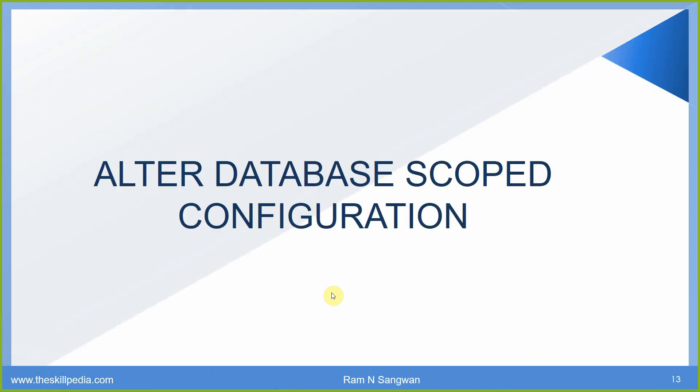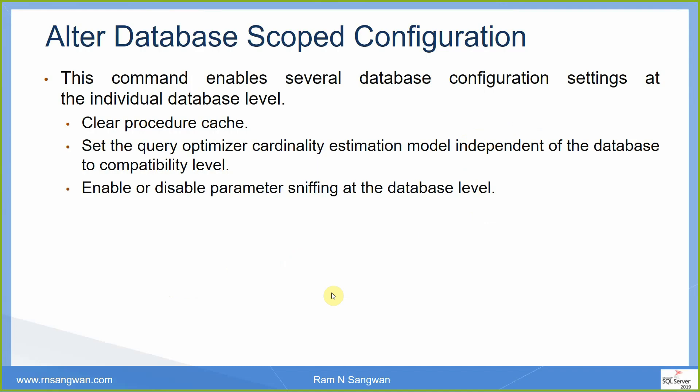The next part covers ALTER DATABASE SCOPED CONFIGURATION. This command enables several database configuration settings at the individual database level. To access the dialog box, right-click on the database name, go to Properties, make your changes, and generate the script — that generated script will use this same syntax.